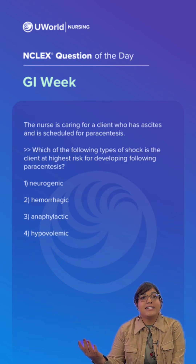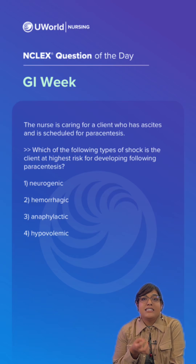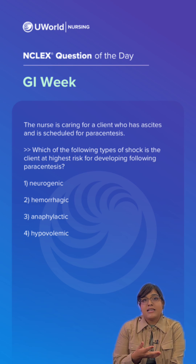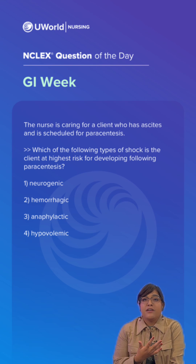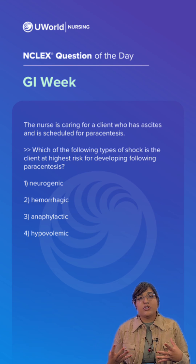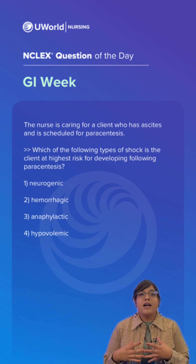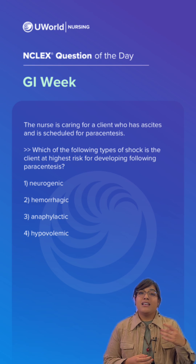So our correct answer is going to be option 4. A paracentesis is a procedure that involves the removal of excess fluid from the peritoneal cavity — ascites — and it's performed to relieve shortness of breath, dyspnea, and discomfort related to that intra-abdominal pressure and fluid volume. So they are at the highest risk for hypovolemia.